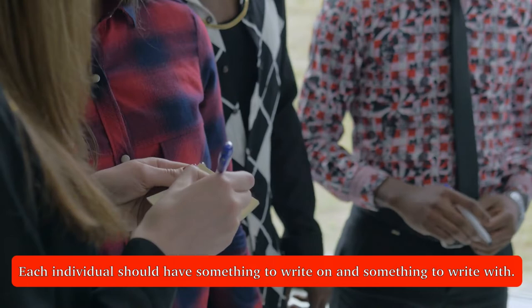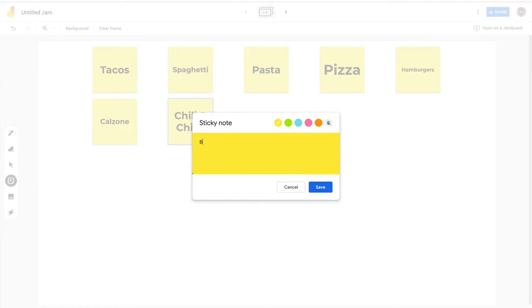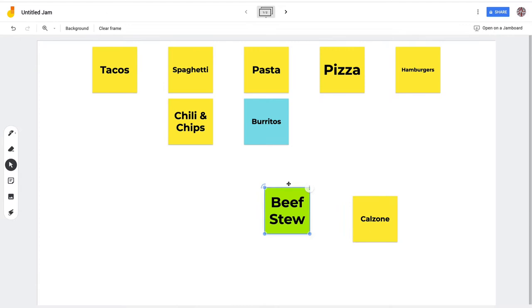To everyone, each individual should have something to write on and something to write with. We like to use a jamboard because it is easy to facilitate and can be used over and over again. If you're not familiar with this powerful tool, some other options are stickies and markers.